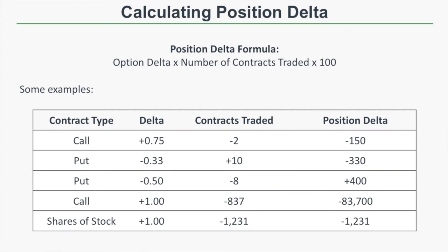To calculate position delta for standard equity options with a contract multiplier of 100, you can use the formula: option's delta times the number of contracts traded times 100. That 100 is the standard equity option contract multiplier. If you're trading options with a non-standard multiplier such as 50, 150, or 1000, then you would substitute that 100 for the appropriate contract multiplier.